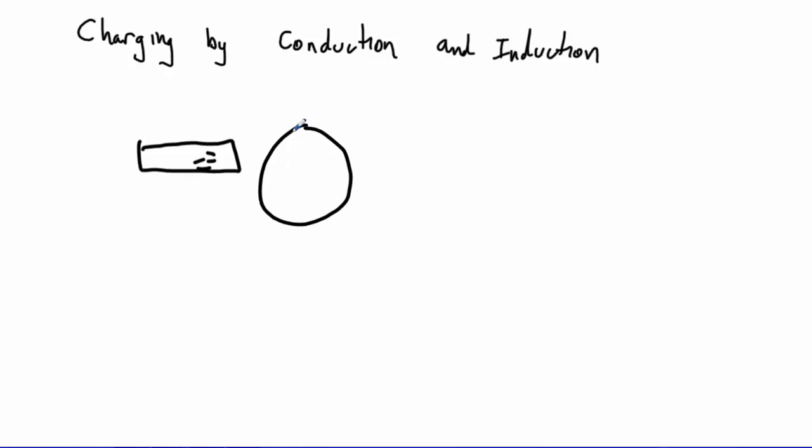If we bring it up next to a conductor, and the conductor allows charge pieces to flow through it pretty easily, then first what happens is the negatives in this thing are going to be pushed away and the positives are going to be drawn close, so the charge separates. It's still neutral. It has no net charge, but the charges have moved apart from each other.